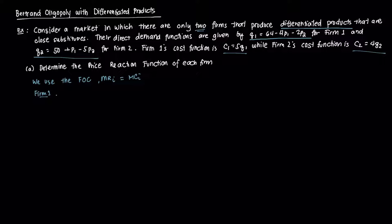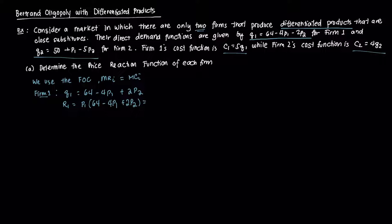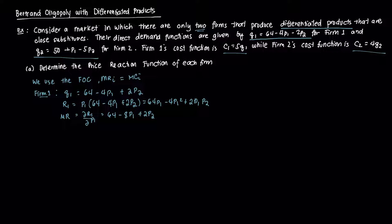For firm 1, the demand function is Q1 = 64 − 4P1 + 2P2. Revenue R1 = P1 × Q1 = P1(64 − 4P1 + 2P2) = 64P1 − 4P1² + 2P1P2. Taking the partial derivative of R1 with respect to P1 gives marginal revenue: MR1 = 64 − 8P1 + 2P2.